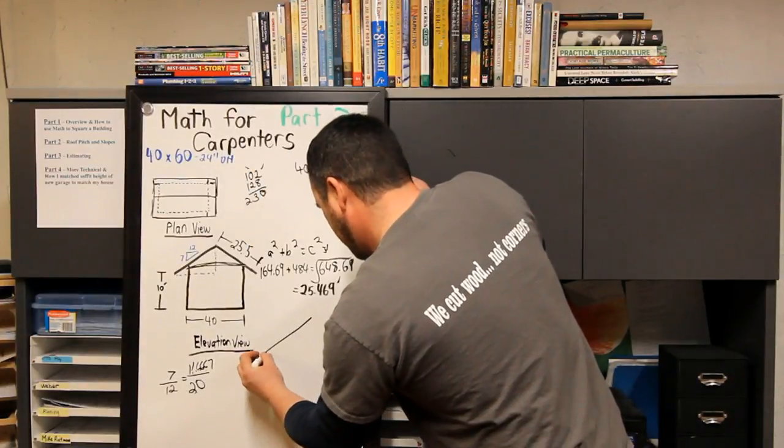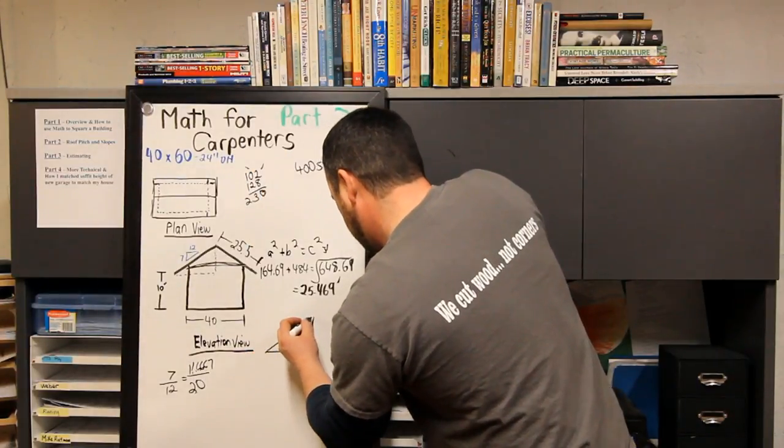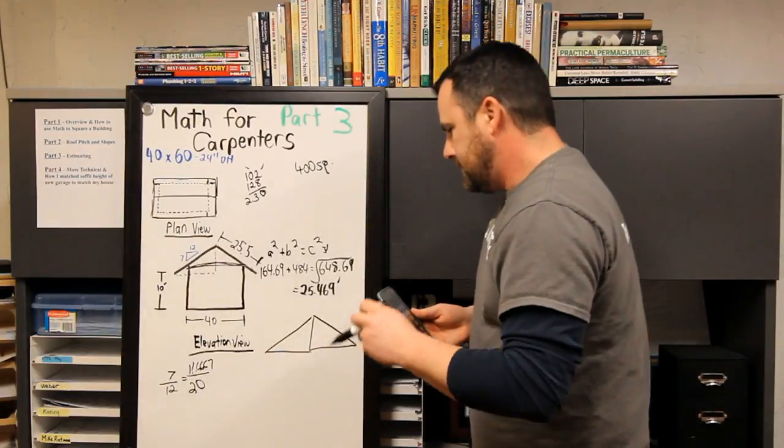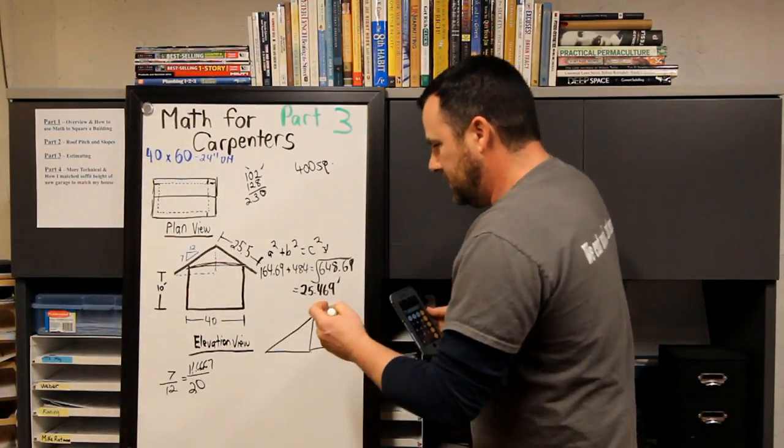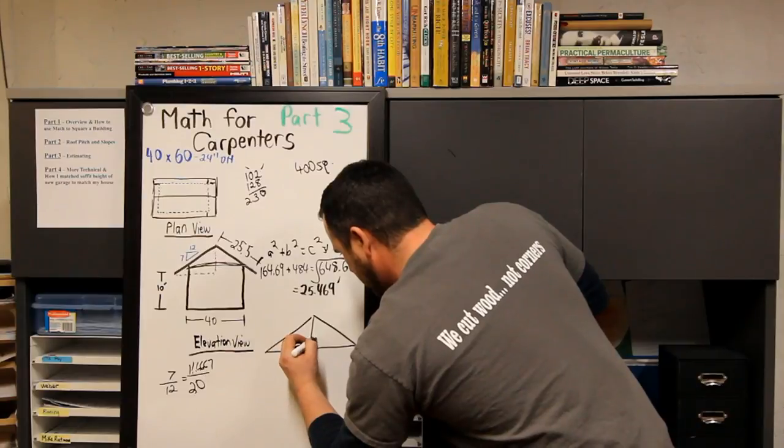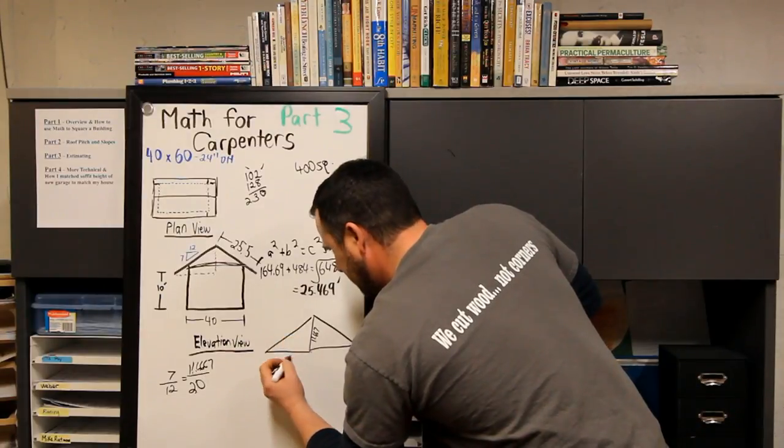What's our rise? 20 times 7 equals, divided by 12, is 11.6667 feet. You get a triangle. Well, you actually have a gable end. Now all you do—you know that this is 11.667 feet and this is 20.